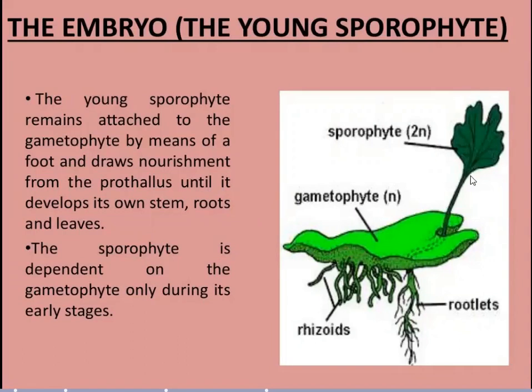The sporophyte is diploid and attaches to the haploid gametophyte. The sporophyte's own stem and roots develop, but the sporophyte is actually dependent on the gametophyte in its early stages. Thank you very much.